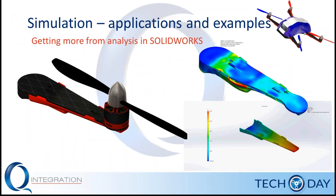For the example we're going to look at today, we have a radial-controlled quadcopter design that our team has come up with here at Quest. What we need to analyze before moving forward with production is whether these new components are going to be strong enough. We're going to perform structural testing on the arms where we'll mount the motors and propellers, and also analyze for manufacturability using SOLIDWORKS Plastics for the plastic parts.